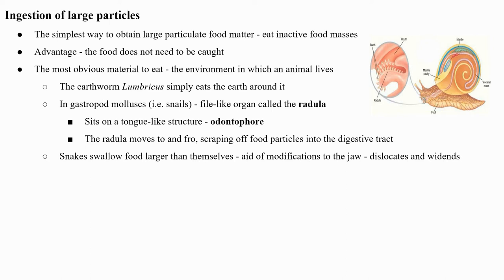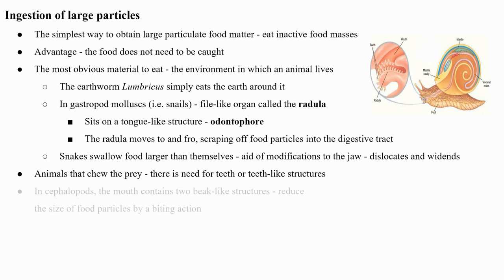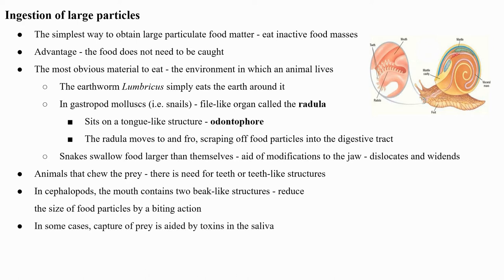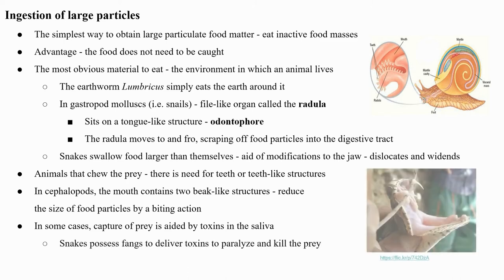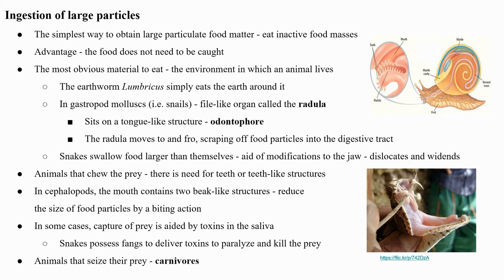Snakes swallow food apparently larger than themselves with the aid of modifications to the jaw. During seizure and swallowing of prey, the jaw dislocates and widens as it is held together with elastic tissue. Animals that chew prey before swallowing have an obvious need for teeth or tooth-like structures. In cephalopods, the mouth contains two beak-like structures that can reduce the size of food particles by a biting action. In some cases, capture of prey is aided by toxins in the saliva; snakes possess fangs specialized to deliver toxins which paralyze and kill captured prey. Animals that seize their prey are called carnivores.